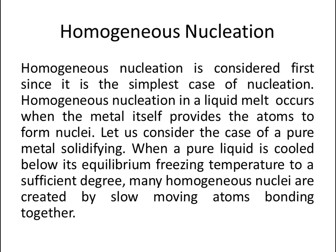Let's talk about homogeneous nucleation. Homogeneous nucleation is considered first since it is the simplest case of nucleation. Homogeneous nucleation in a liquid melt occurs when the metal itself provides the atoms to form nuclei. When a pure liquid is cooled below its equilibrium freezing temperature to a sufficient degree, many homogeneous nuclei are created by slow-moving atoms bonding together.